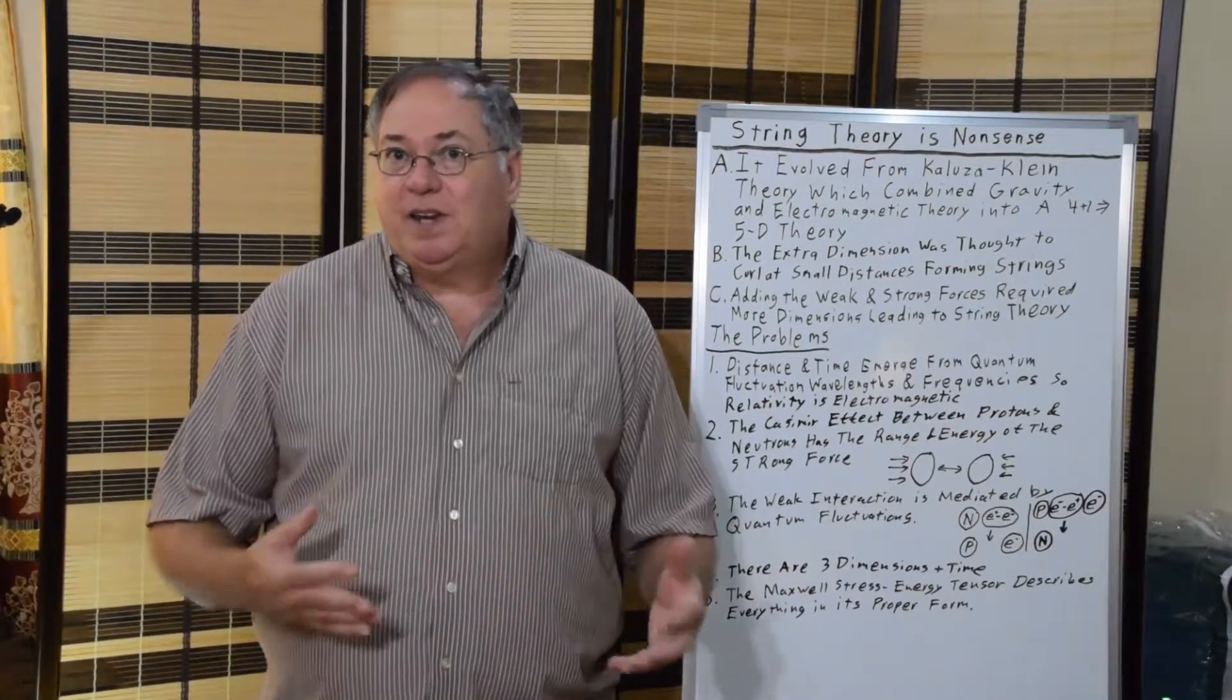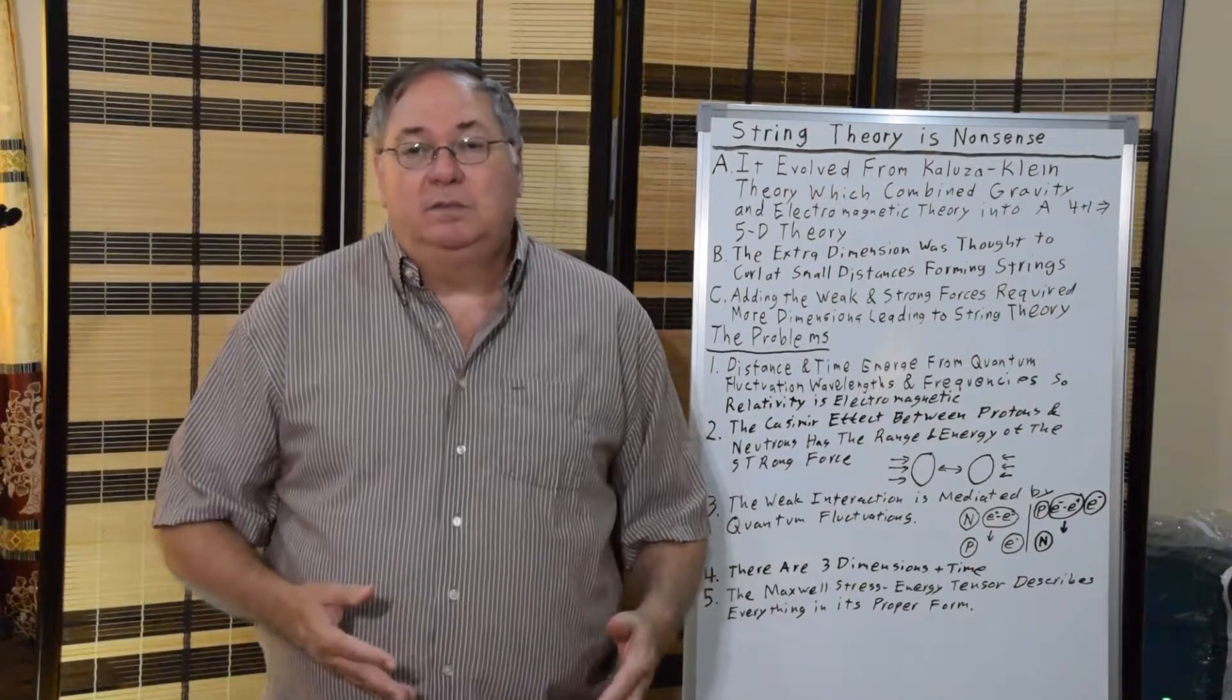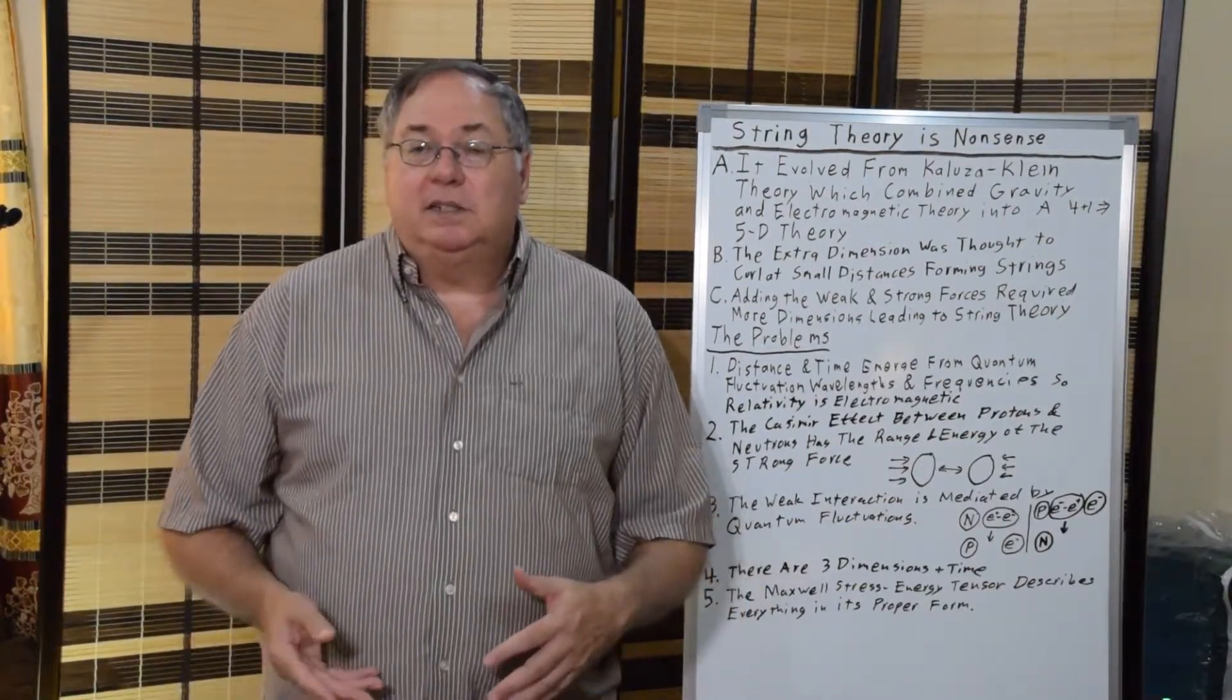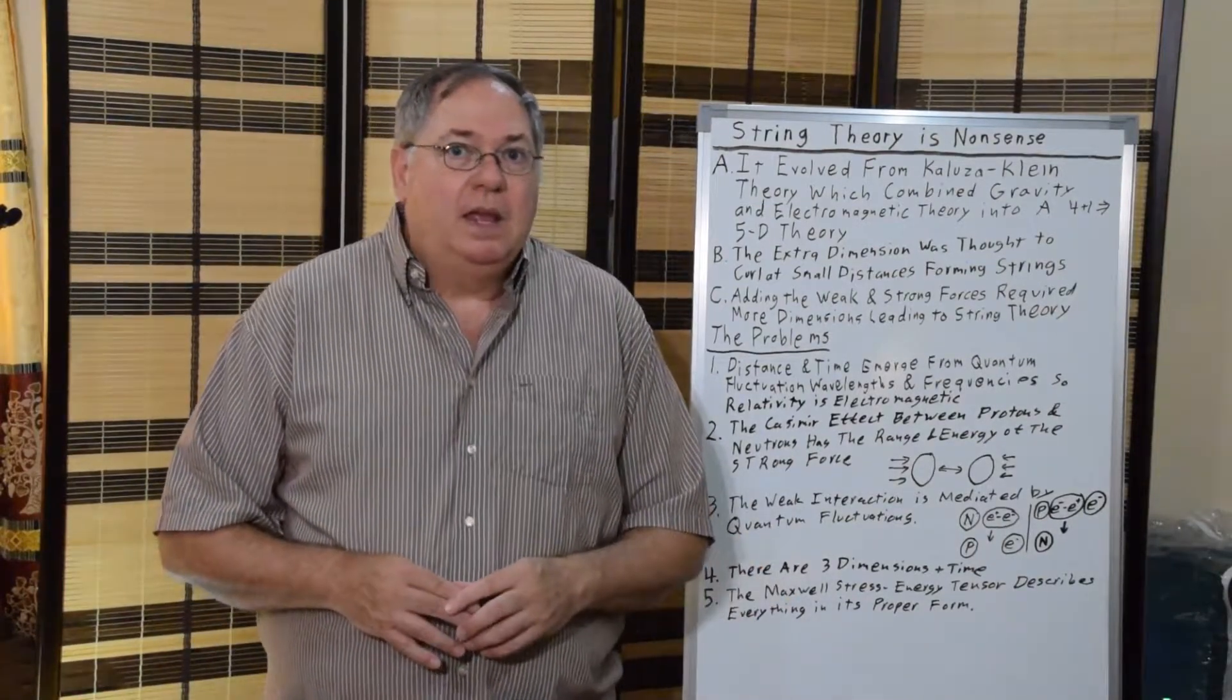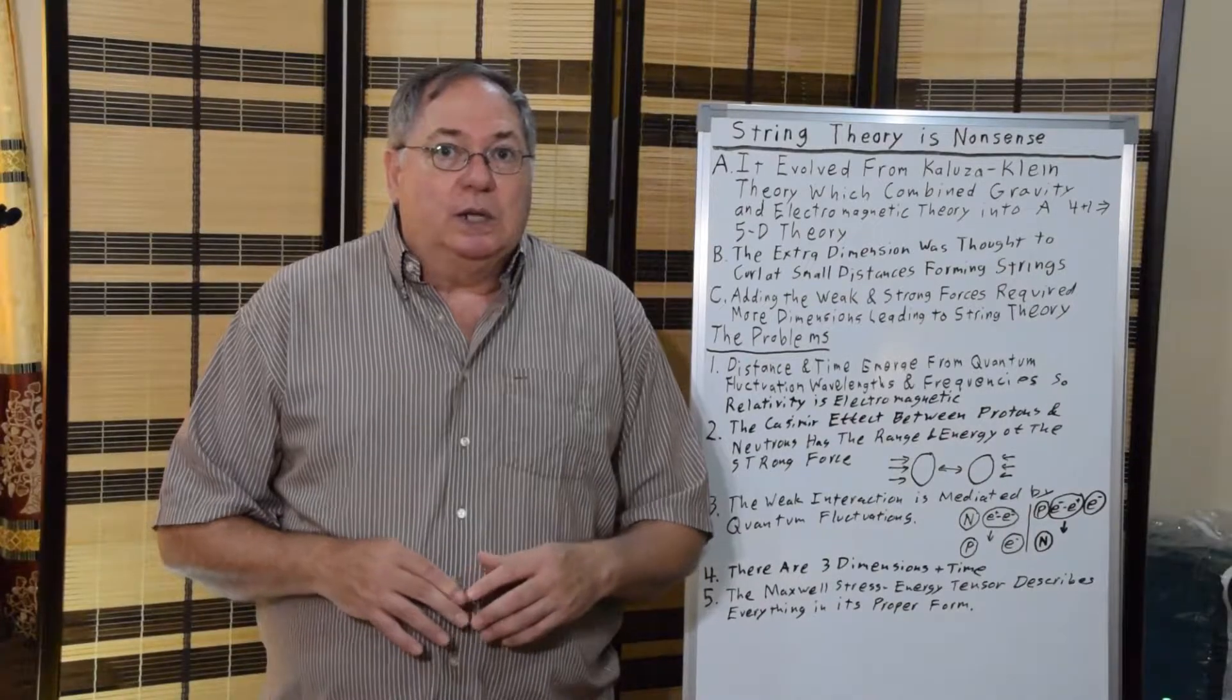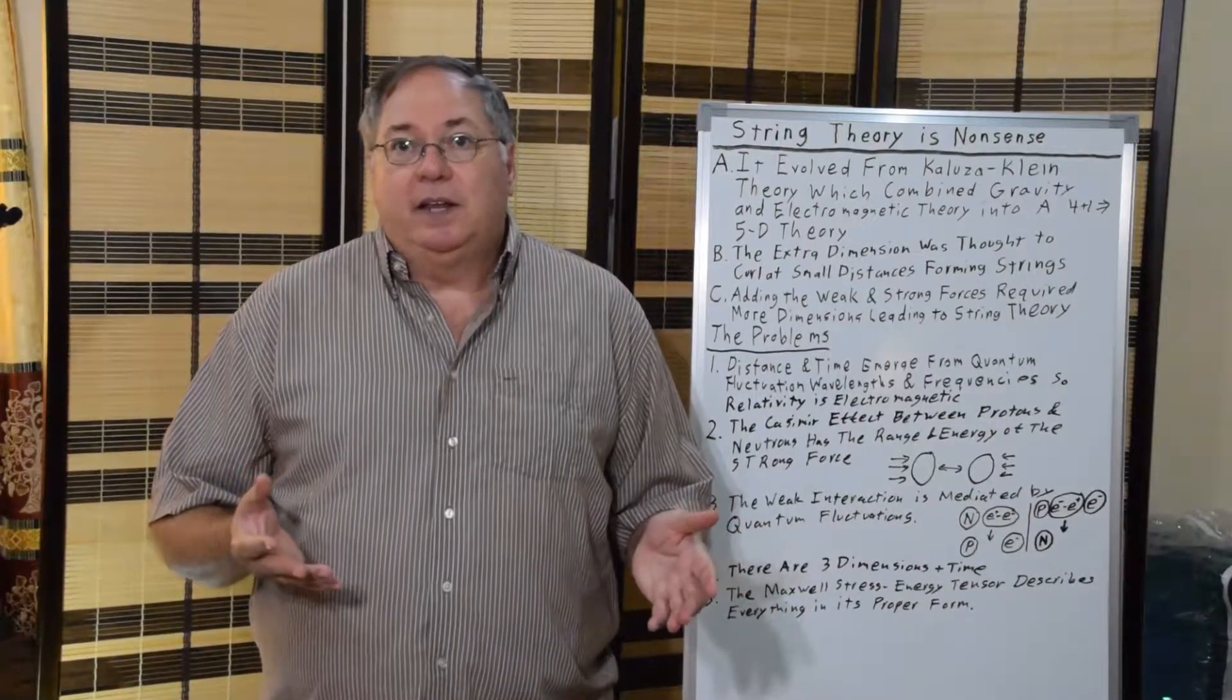When you do the Maxwell stress energy tensor, you have to use all three plus one dimensions anyway. So, the question came about with the Kaluza-Klein Theory is, well, where's this extra dimension?